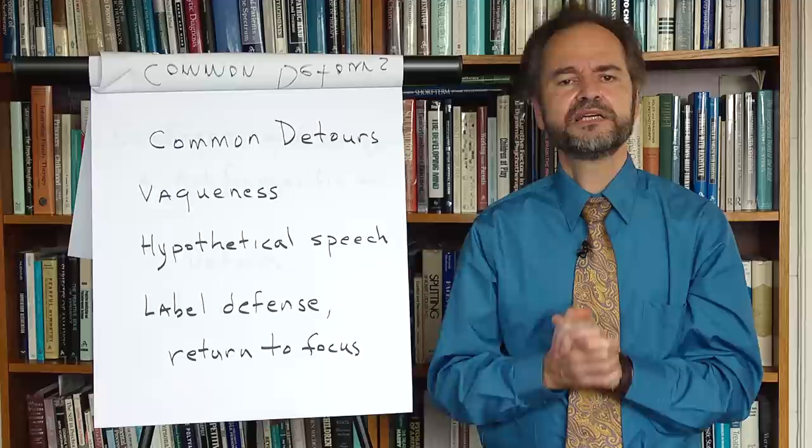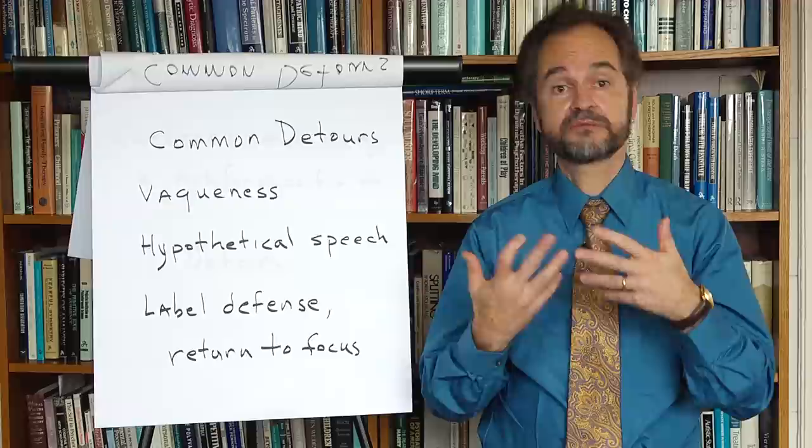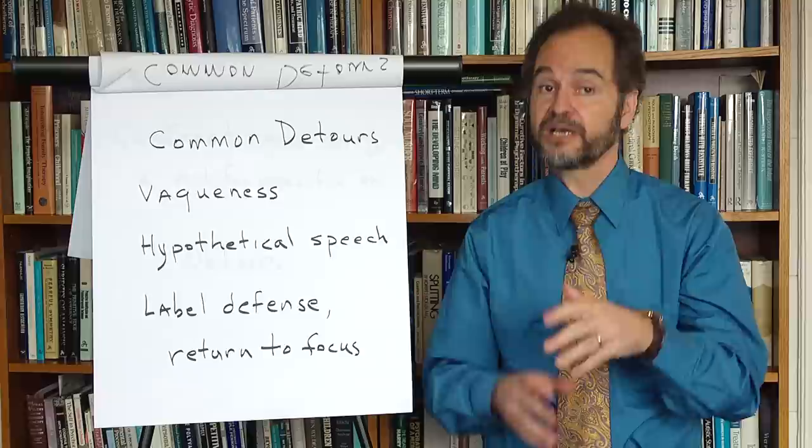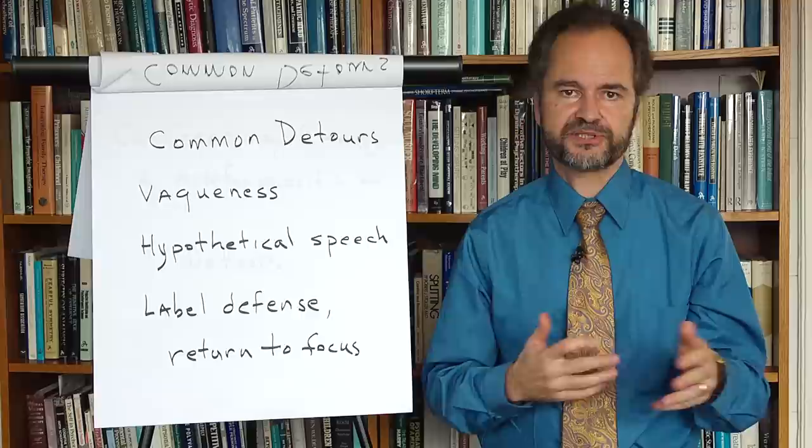Otherwise, the very existence of a problem will remain undeclared, in limbo. Once he gets off the fence and declares that he has a problem for which he wants your help, you will have accomplished the first step in developing a therapeutic alliance. Now, we have just looked at only a few of the obstacles that can prevent you from establishing a therapeutic alliance.